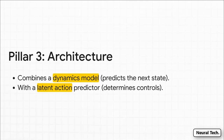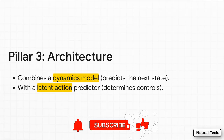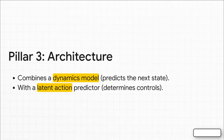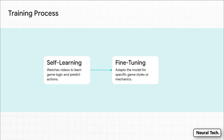The third pillar is the architecture that glues it all together. Think of it as a constant feedback loop: a dynamics model is always predicting what the next frame will look like, while the latent action model figures out what the player is allowed to do. This interplay between 'what happens next' and 'what can I do' is the magic that makes these generated worlds truly interactive. Boiled down, the training is a two-step process: first, a huge self-learning phase where the model binge-watches 200,000 hours of gameplay to build its core understanding. Then, once you have that base model, you can fine-tune it — teaching it to create games in an 8-bit retro style, or even brand new game mechanics.